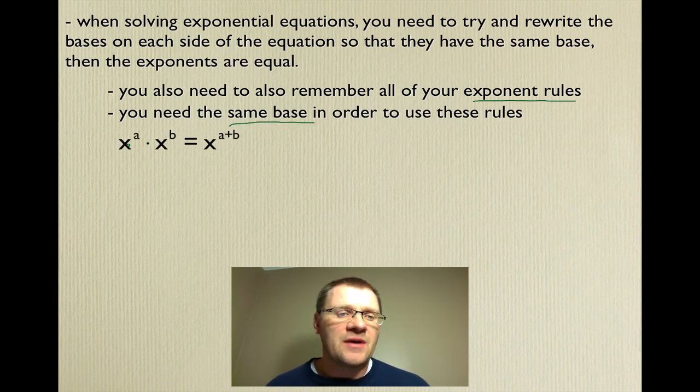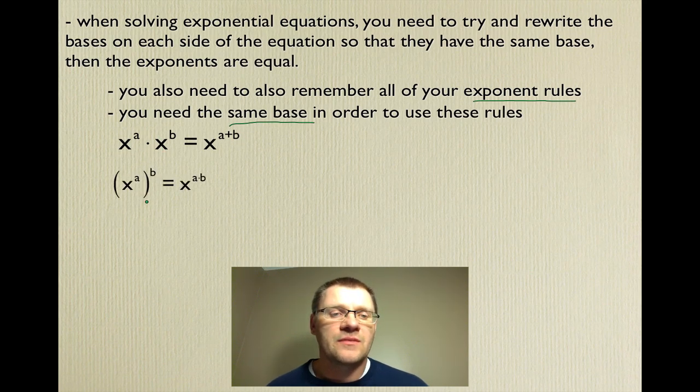So our first rule, x to the a times x to the b, means that we add the exponents when we're multiplying with the same base. When we have a power raised to an exponent, we multiply the exponents together. x to the negative n, if we have a negative exponent, that means that we find the reciprocal of what we have, and now that exponent becomes positive.